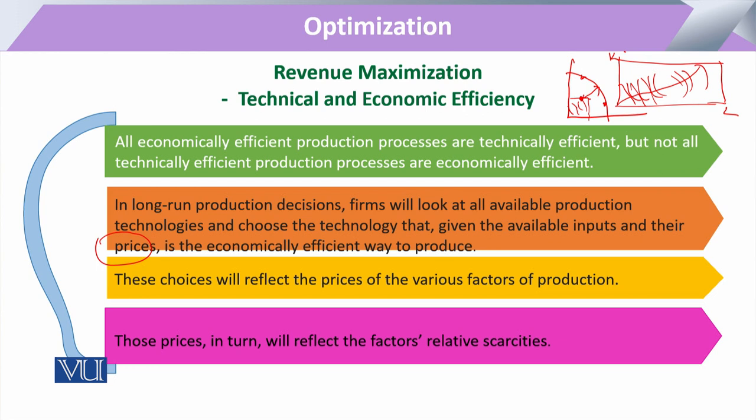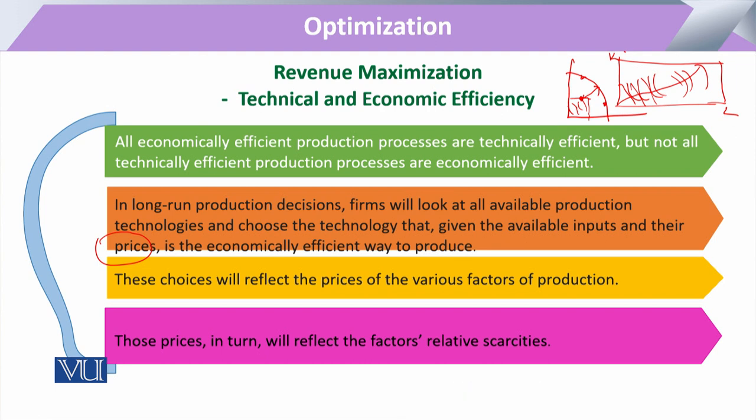Keeping in with those prices, when the firm decides its factors of production, they may vary from their previous combination. A firm previously working on all technically efficient points may be technically efficient but not economically efficient — meaning in terms of rupees available or input prices, that firm was not economically efficient. However, if any firm is economically efficient, it means that firm is also technically efficient as well.